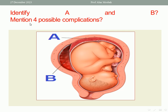Mention four possible complications: intrauterine fetal death, DIC, acute kidney injury, and postpartum hemorrhage — Couvelaire uterus. All these are complications of placental abruption.